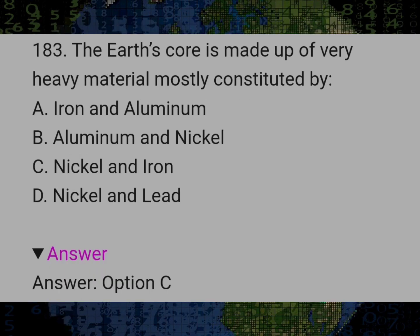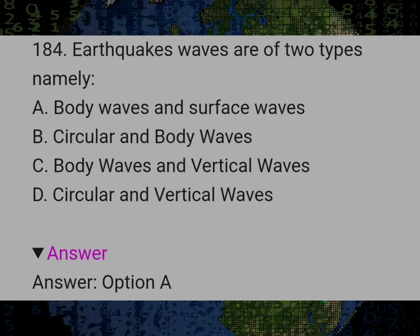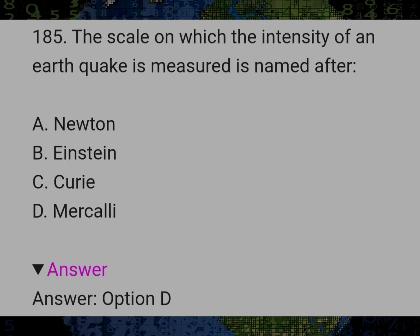The earth's core is made up of very heavy material mostly constituted by? Answer C: Nickel and iron. Earthquake waves are of two types namely? Answer A: Body waves and surface waves. The scale on which intensity of an earthquake is measured is named after Answer D: Mercalli.